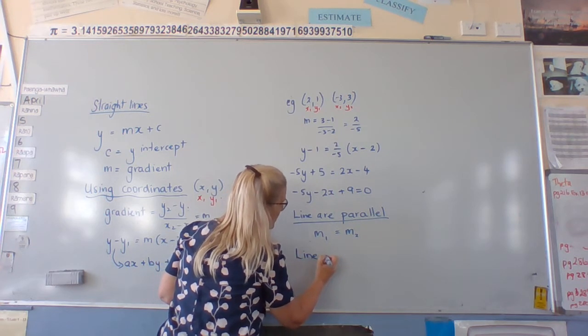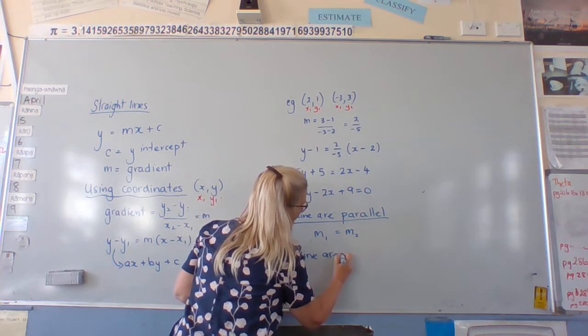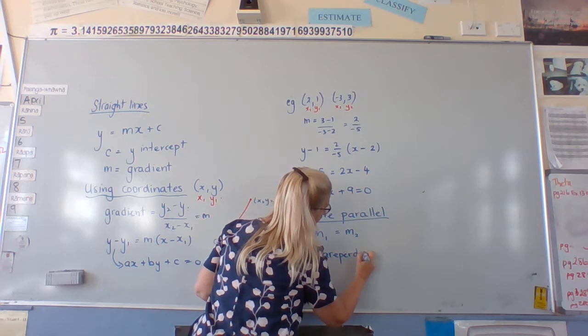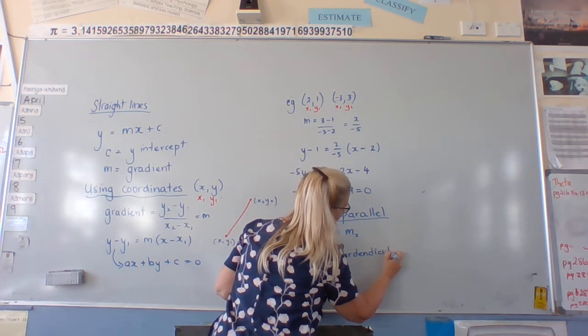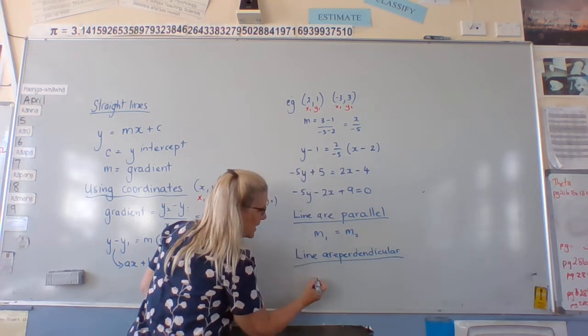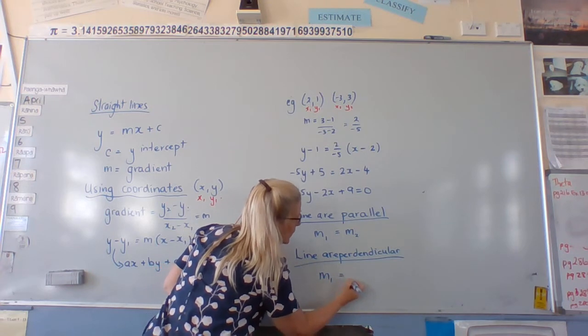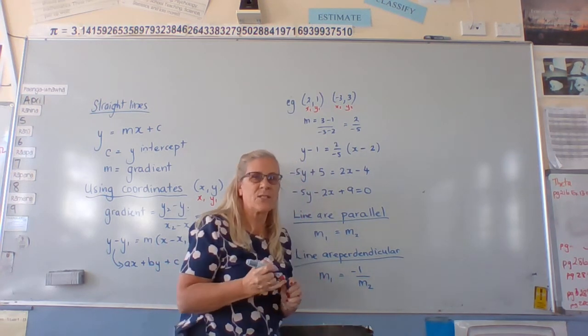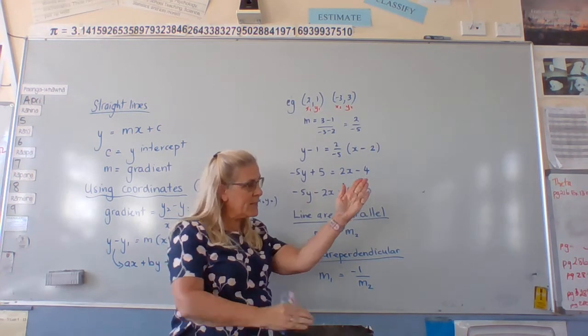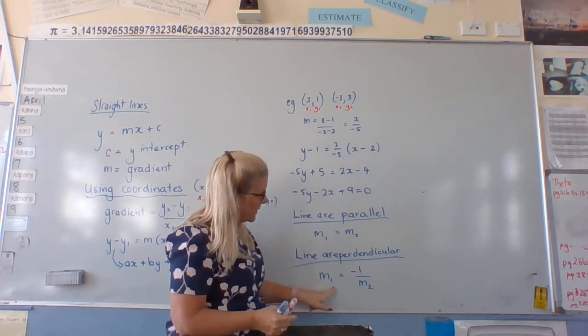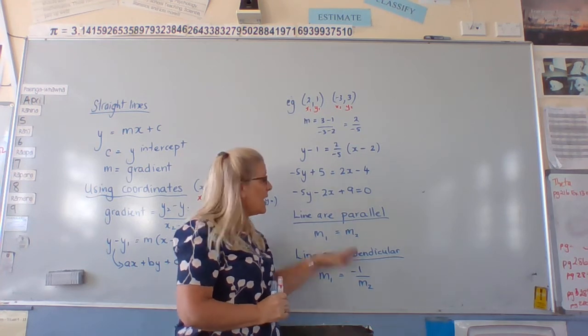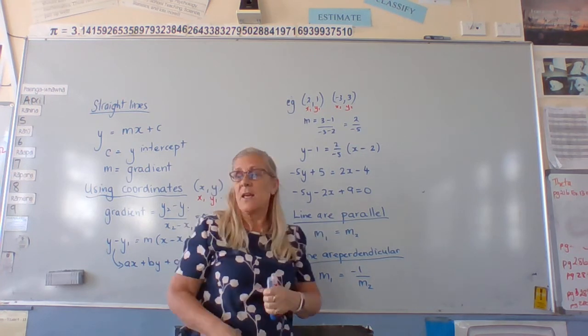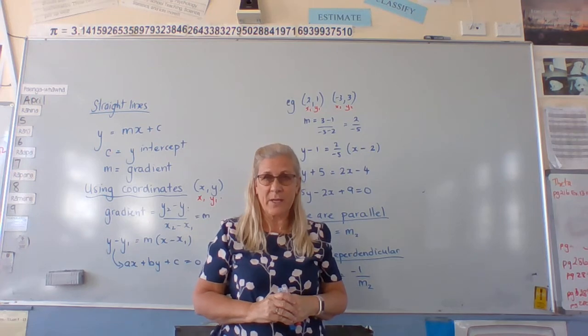If they're perpendicular, we have a really interesting one. M1 will equal the negative reciprocal of the other line's gradient. So the two gradients will meet at right angle. So it'll be the negative reciprocal to be perpendicular. These are useful hints in being able to do this particular topic. Thank you.